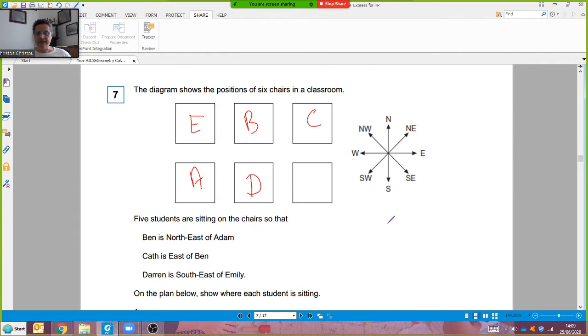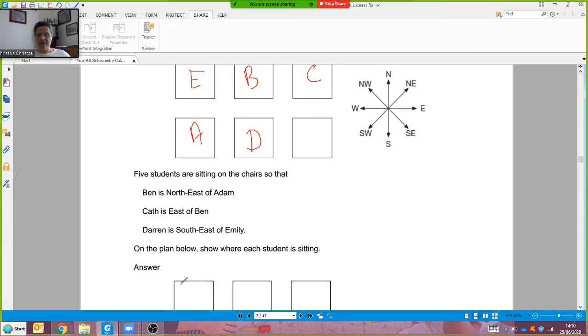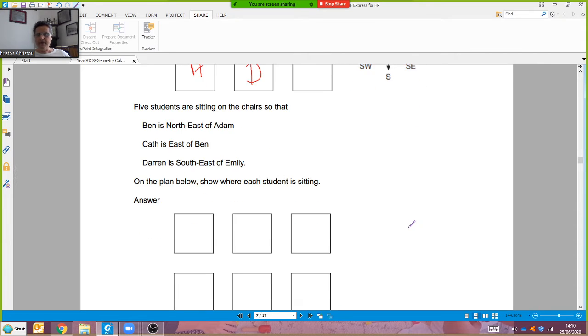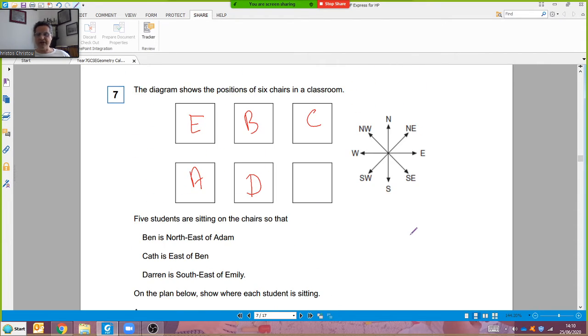This is like a practice grid. Ben is northeast of Adam so northeast is in that direction. If Adam is here then Ben has got to be there, northeast from Adam. Kathy's east of Ben. Well that's easy, if Ben's there east is this way to the left of Ben.